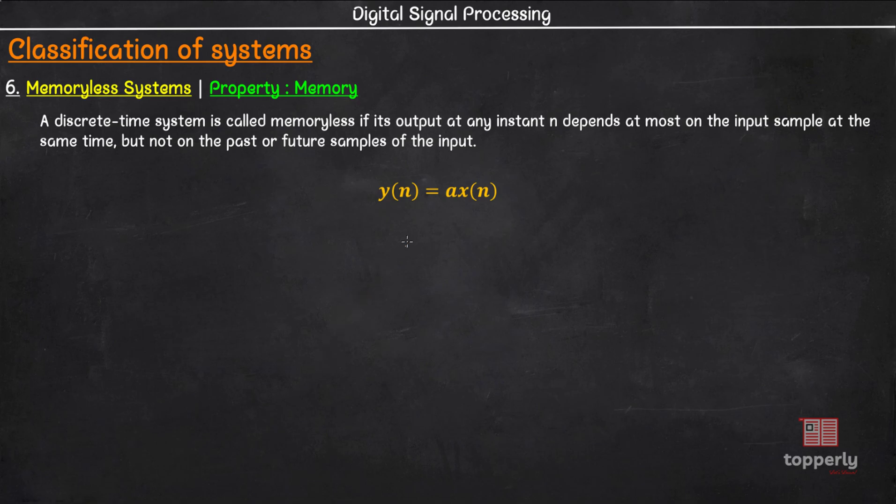As an example, y(n) = a·x(n) is a memoryless system because the output at instance n depends only on the input x(n) at the same instance n. Another memoryless system is y(n) = n·x(n) + b·x³(n). Here also the output y(n) depends only on the inputs at the same instance n.